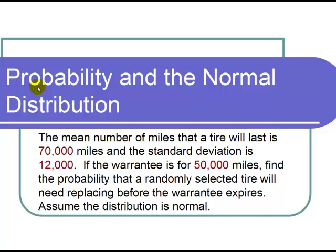This is a video on probability and the normal distribution. The question states the mean number of miles that a tire will last is 70,000 miles and the standard deviation is 12,000. If the warranty is for 50,000 miles, find the probability that a randomly selected tire will need replacing before the warranty expires. Assume the distribution is normal.